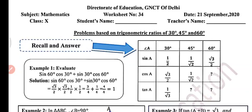Hello everyone, welcome to my YouTube channel NCRT Math Sub. Today in this video we will do worksheet number 34, class 10, subject mathematics. We will do some problems based on the trigonometric ratios of 30 degree, 45 degree, and 60 degree. So first of all, recall and answer.